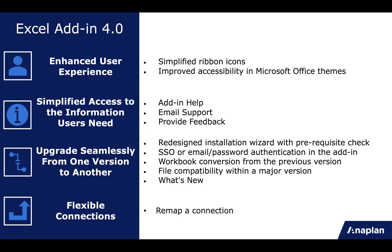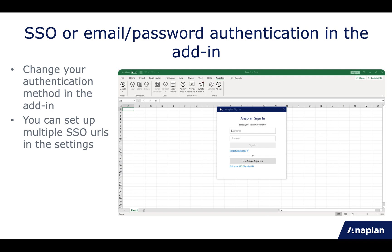We've also removed the authentication choice between SSO and email and password from the installation path — it is now directly in the add-in. You can sign in with either email and password or single sign-on. If you're a partner who needs to switch regularly between the two, this is much easier. You can even set up multiple SSO URLs in the settings using the authentication settings, which is a great improvement for anyone who has entered an incorrect friendly URL or partners who need to change regularly.